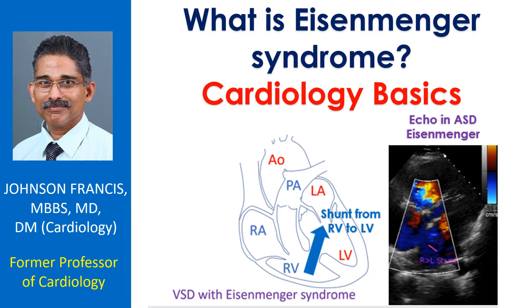Eisenmenger syndrome is a late complication of congenital heart diseases with large left-to-right shunts. Fortunately, it is rare nowadays because most conditions which can cause Eisenmenger syndrome are detected by neonatal screening and treated early, so that this complication does not develop later.